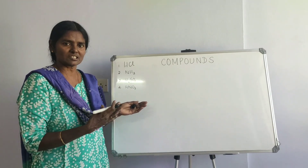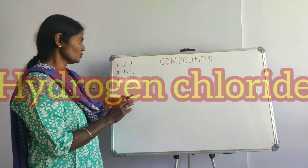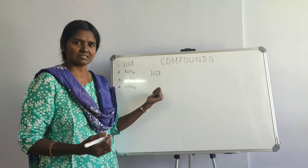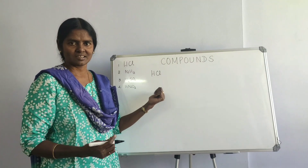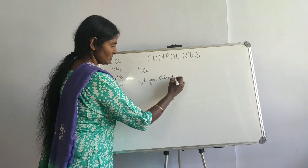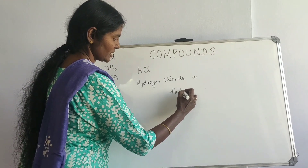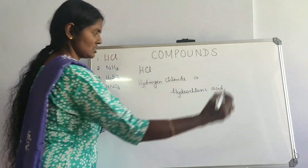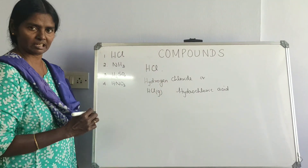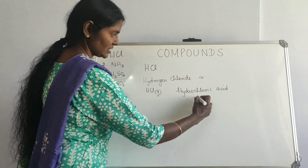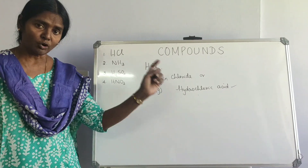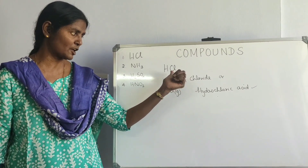Today in our first session, we are going to cover hydrogen chloride. You would have known this as hydrochloric acid, but here I'm saying hydrogen chloride. You should know the difference: HCl in the gaseous state is called hydrogen chloride, and when water is added to it and it becomes a liquid, it is called hydrochloric acid. Both names denote the same formula HCl.